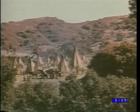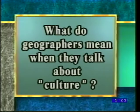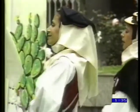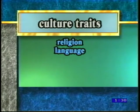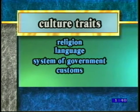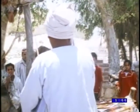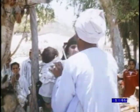What do geographers mean when they talk about culture? Culture can be defined as a way of life that distinguishes a people from another group. These distinguishing factors or cultural traits can be reflected in a people's religion, language, system of government, customs, and beliefs. These traits can be passed on from one generation to the next.